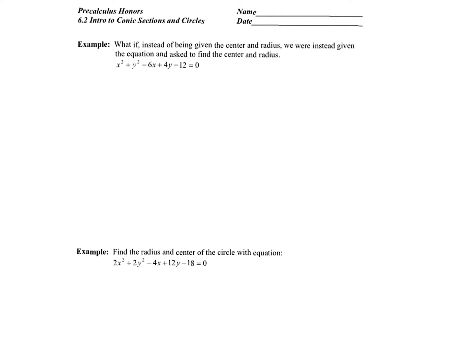Now we're going to work backwards — I'm giving you the general form and I want you to find the center and radius. The only way to do that is to transform the general equation into center-radius form, and we do that by completing the square.